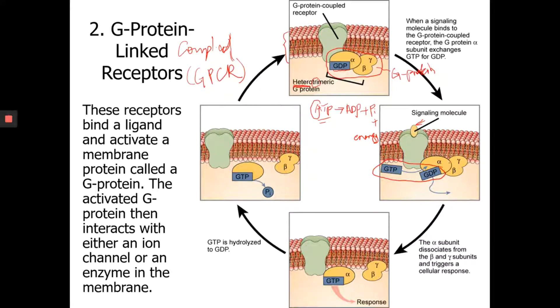Now, once activated by the receptor, the subunits are going to disassociate. So you can see alpha is here, and then beta and gamma kind of disassociate from the alpha subunit.